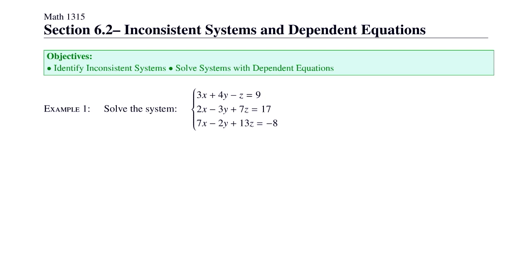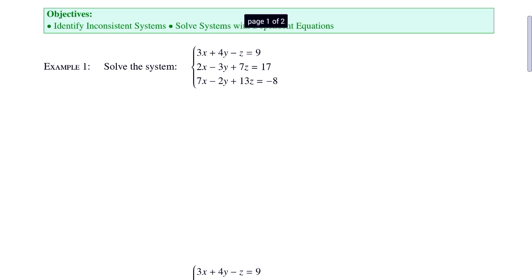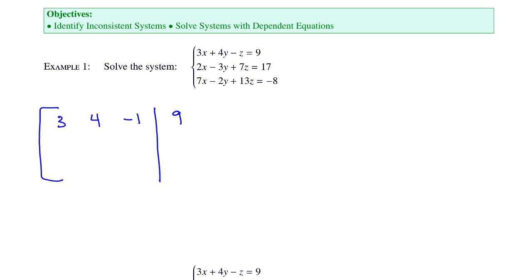Let's take a look at example one. Solve the system: 3x plus 4y minus z equals 9; 2x minus 3y plus 7z equals 17; and 7x minus 2y plus 13z equals negative 3. Let's use the reduced row operations from the calculator to solve this matrix. First, let's set up the augmented matrix: 3, 4, negative 1, 9; 2, negative 3, 7, 17; 7, negative 2, 13, and negative 8.